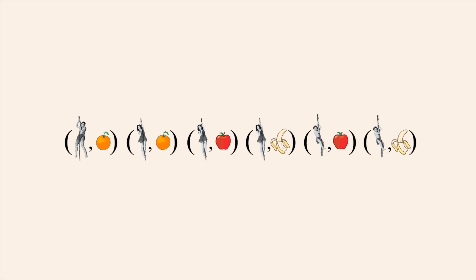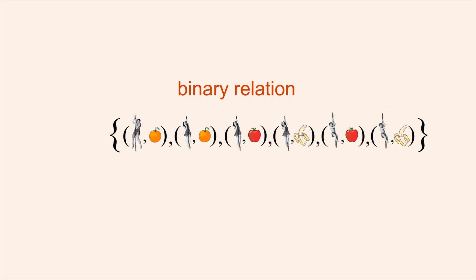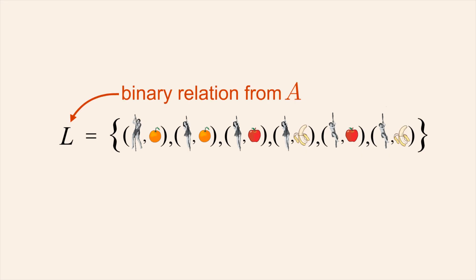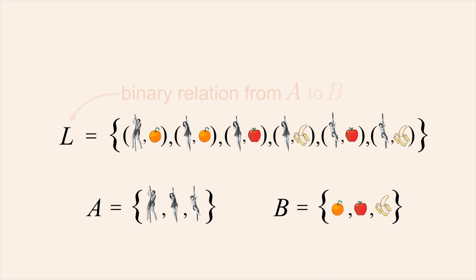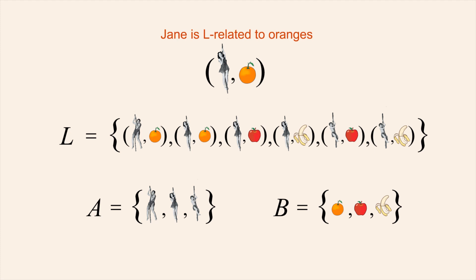This collection of ordered pairs symbolizes associations from members of one set to members of another set. We call the set that contains these ordered pairs a binary relation. Let's name this set of ordered pairs L, so we say that L is a binary relation from set A to set B. Each ordered pair that's a member of set L makes a statement about how one person in set A is related to one fruit in set B. A mathematician would say that this ordered pair makes the statement 'Jane is L-related to oranges,' or in plain English, Jane likes oranges.